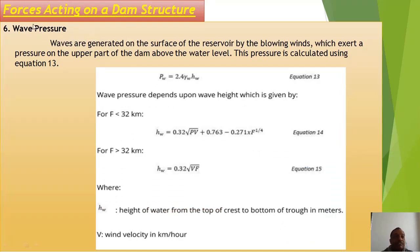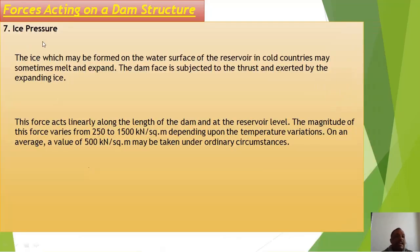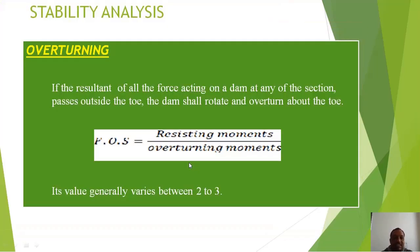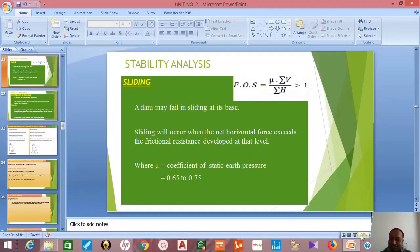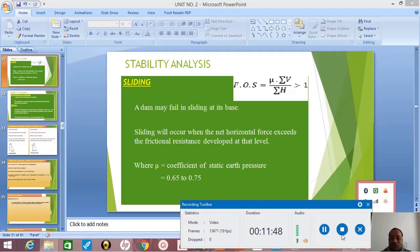Self-weight of the dam is necessary for stability. Silt pressure is calculated using specific formulas. Wave pressure is also calculated using specific formulas. Stability analysis of the dam covers: stability against overturning, against sliding, shear, concrete overstresses, and foundation overstresses. These topics will be covered in more detail in the next video. Watch this video and gain knowledge regarding dams.